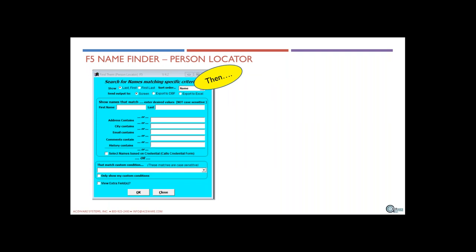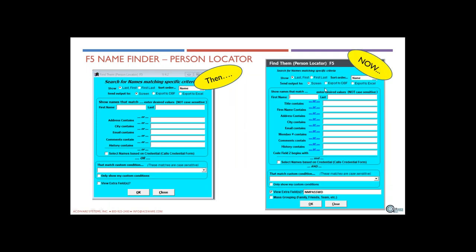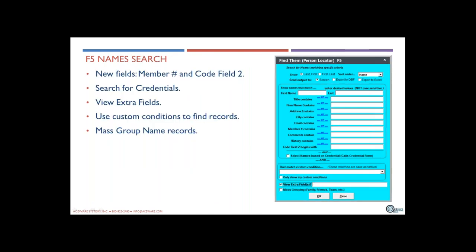The name finder — then and now. Originally the name finder was developed to look up by last name, but now with version 8.0 you can search by first name, title, address field or address string, city, member number, comments, and code field 2. Member number and code field 2 are relatively new, and you can now also search for credentials in a name.